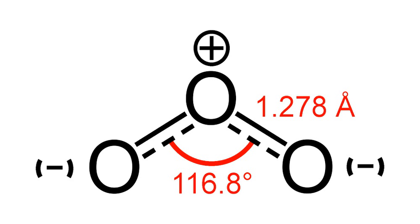Ozone is a powerful oxidant, far more so than dioxygen, and has many industrial and consumer applications related to oxidation. This same high oxidizing potential, however, causes ozone to damage mucus and respiratory tissues in animals and also tissues in plants above concentrations of about 0.1 ppm. While this makes ozone a potent respiratory hazard and pollutant near ground level, a higher concentration in the ozone layer, from 2 to 8 ppm, is beneficial, preventing damaging UV light from reaching the Earth's surface.